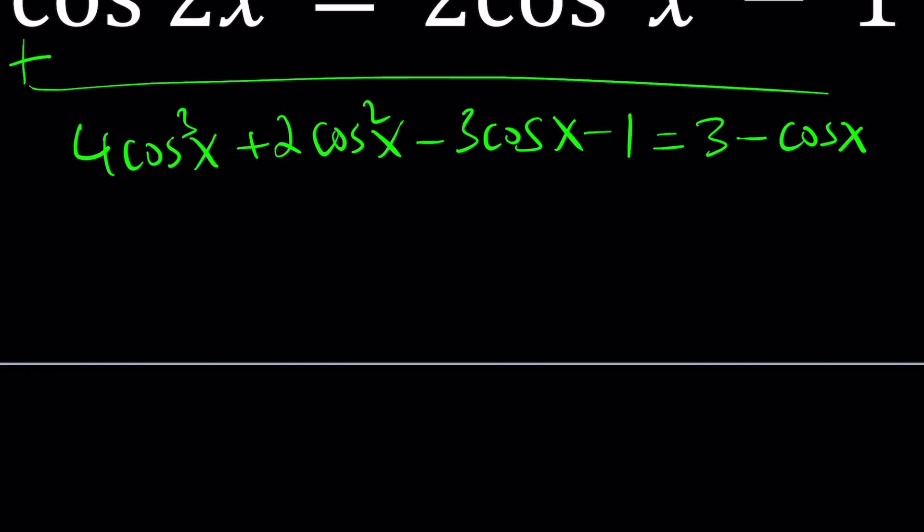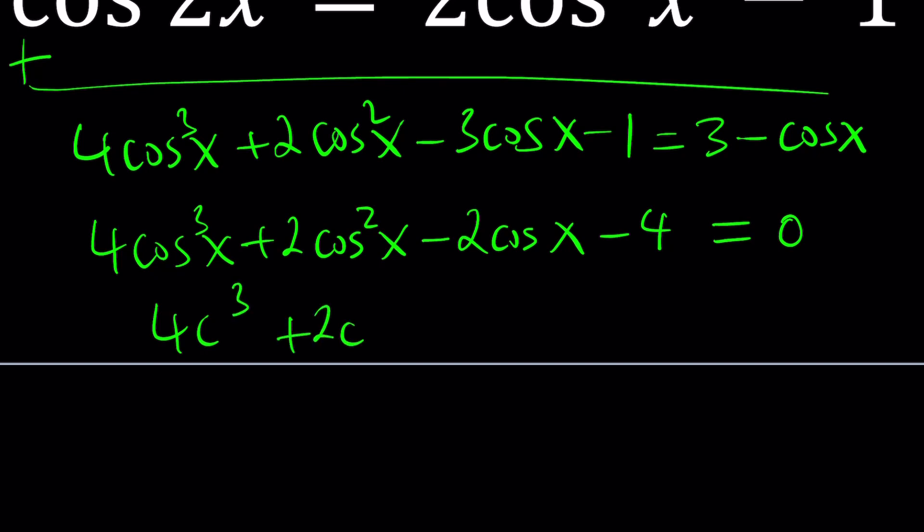Now let's go ahead and put everything on the same side. 4 cosine cubed x minus 3 plus 1 minus 2 cosine x, but I'm going to write this square first. So plus 2 cosine squared minus 2 cosine x minus 1 minus 3 is minus 4 equals 0. Now you can go ahead and replace cosine x with something like c and then you get 4c cubed plus 2c squared minus 2c. Hopefully you see what I see. Minus 4 equals 0.